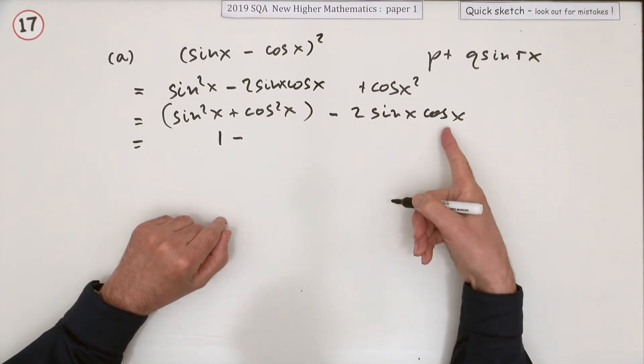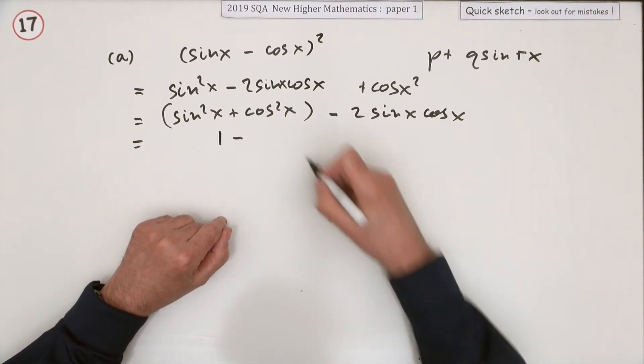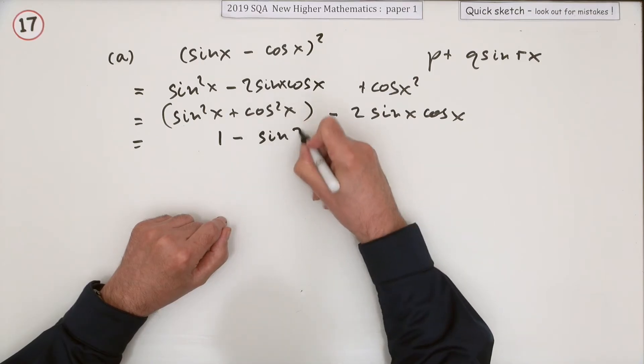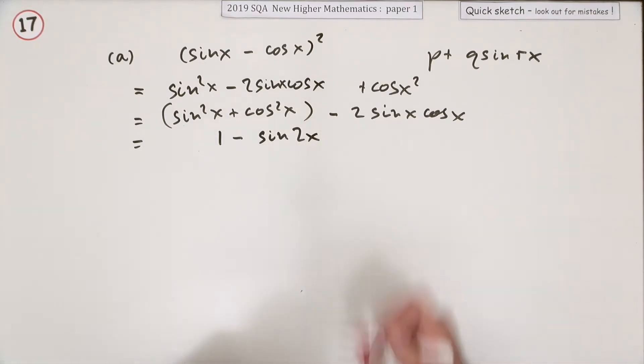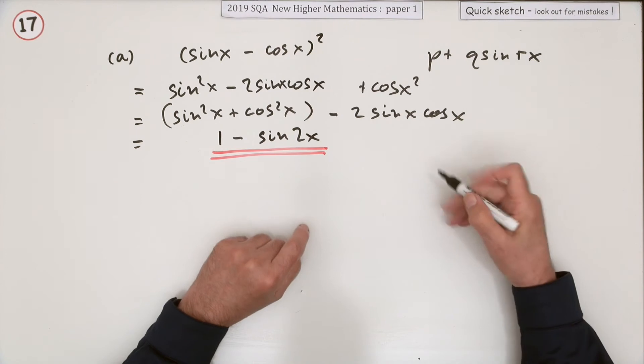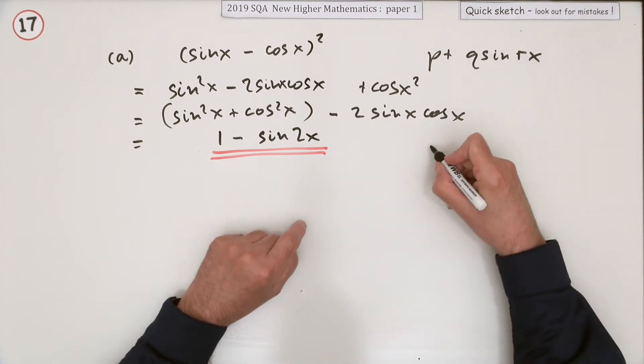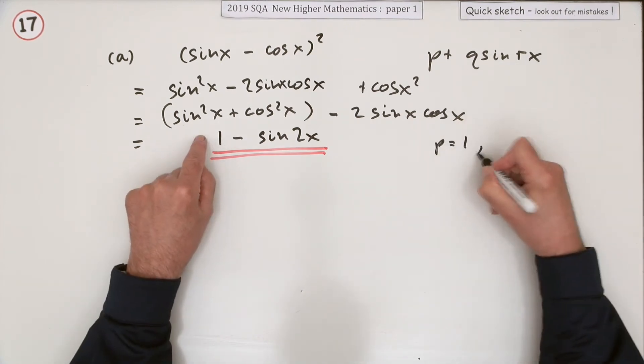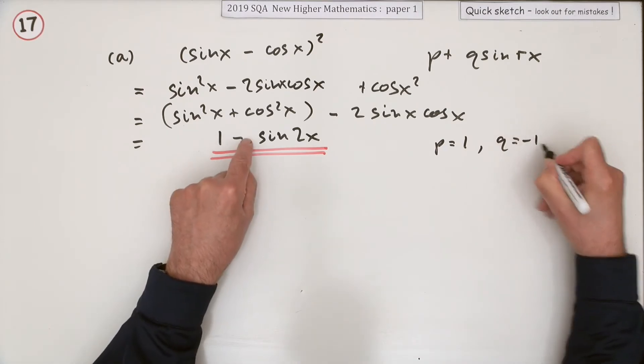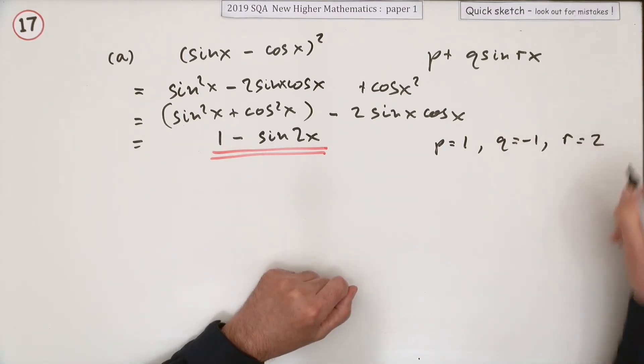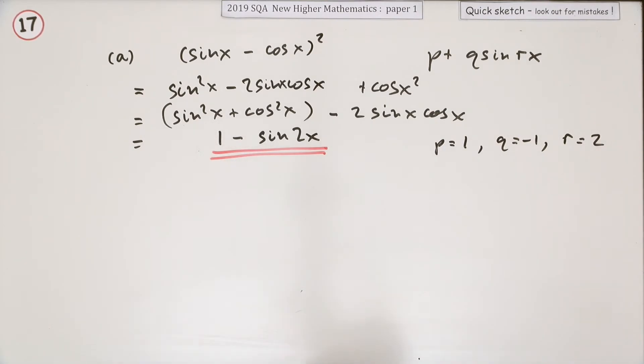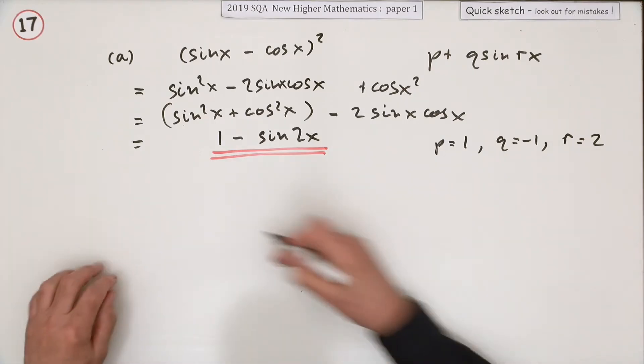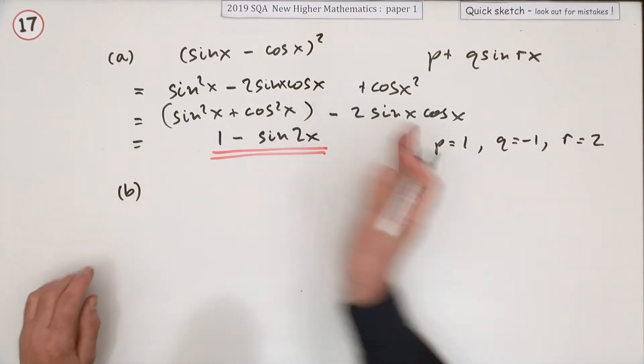2sin x cos x - that's the expansion of sin 2x. I don't know if that's sufficient just to have it like that, or whether you're meant to identify what P, Q, and R are. Well, P would be 1, Q would be -1, and R would be 2 if that's what they wanted. I'm just playing safe.